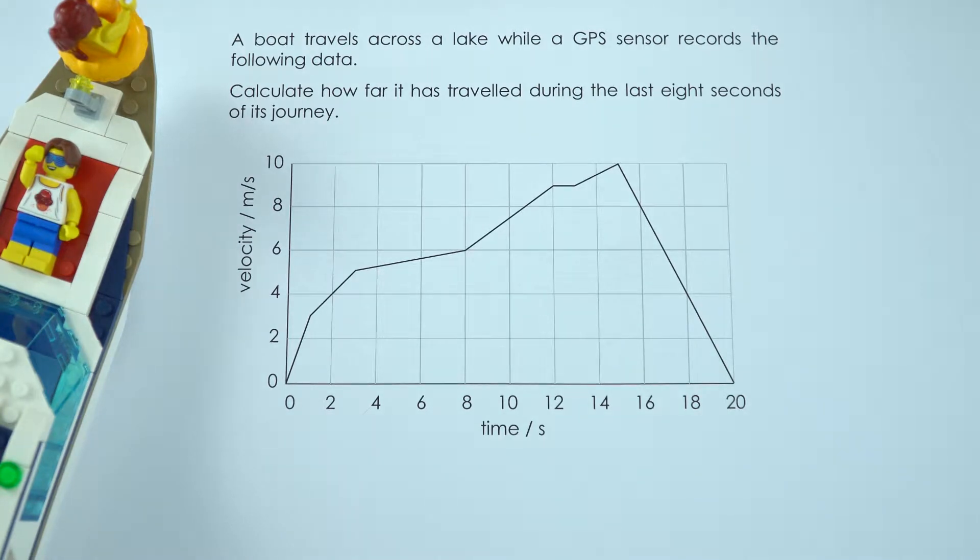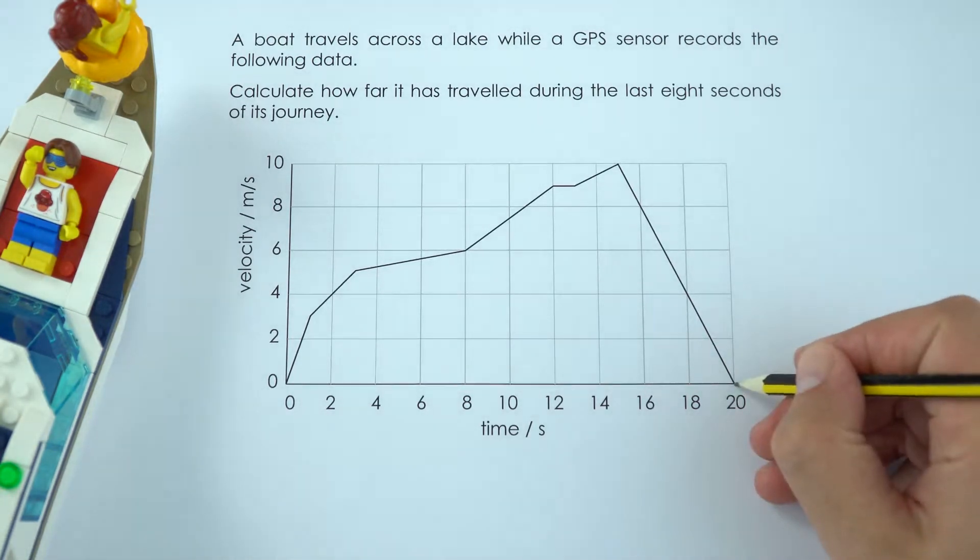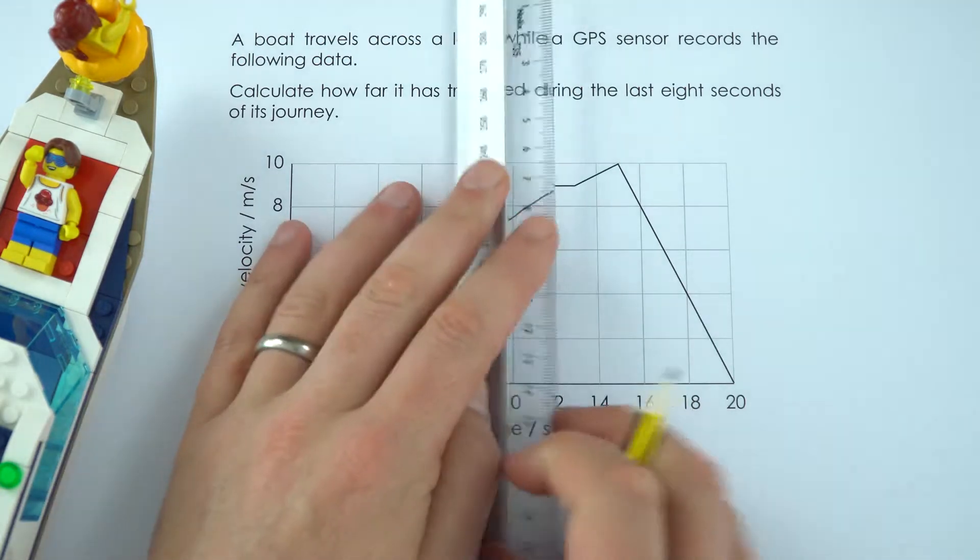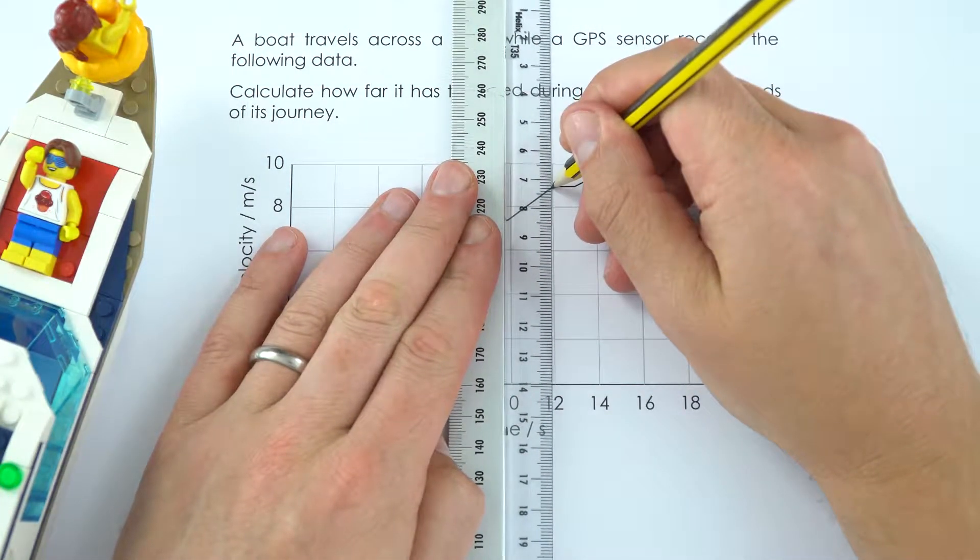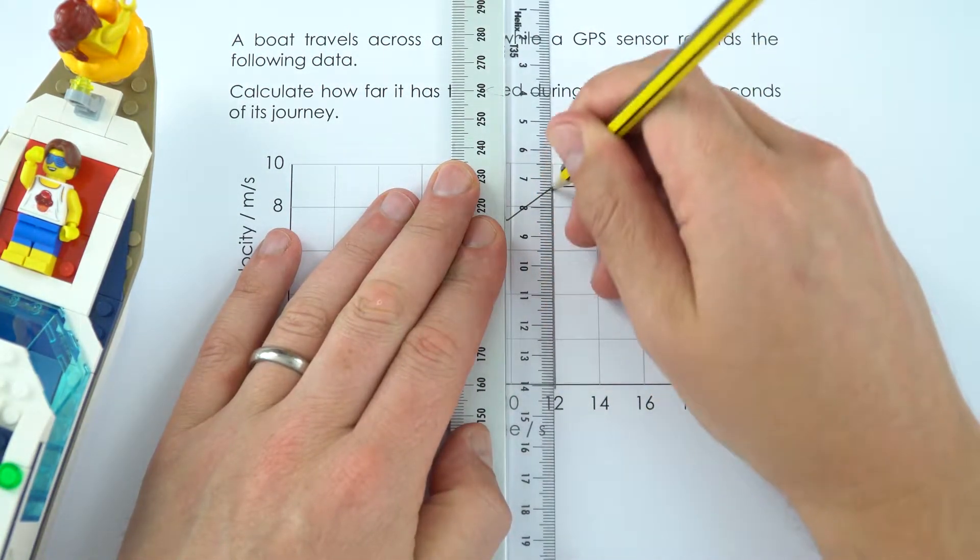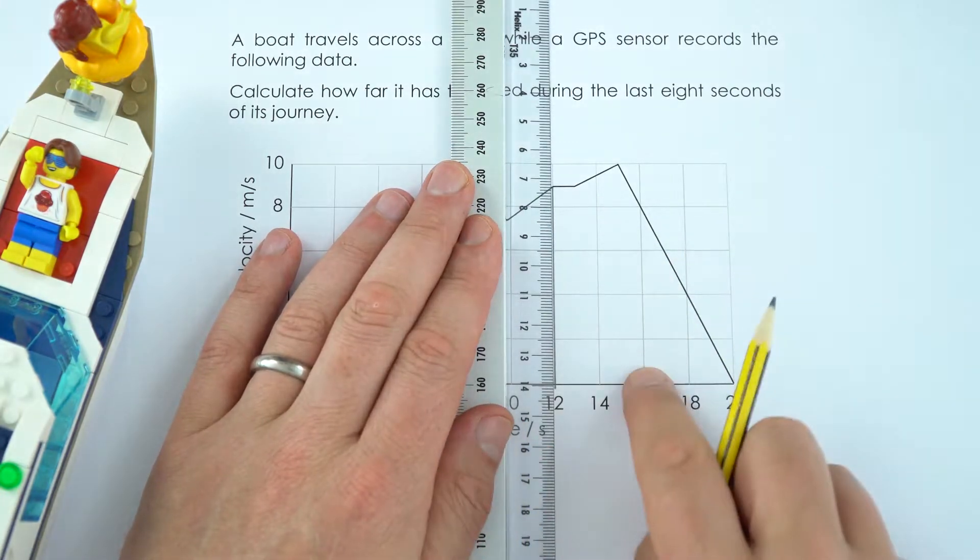So what I'm going to do is just draw that on. If it ended at 20 we're going to take eight off that and we're going to be looking at the journey from 12 seconds onwards. Okay so this is the area that we need to work out.